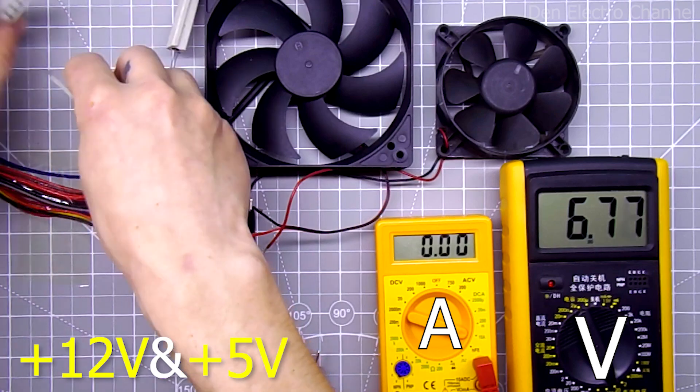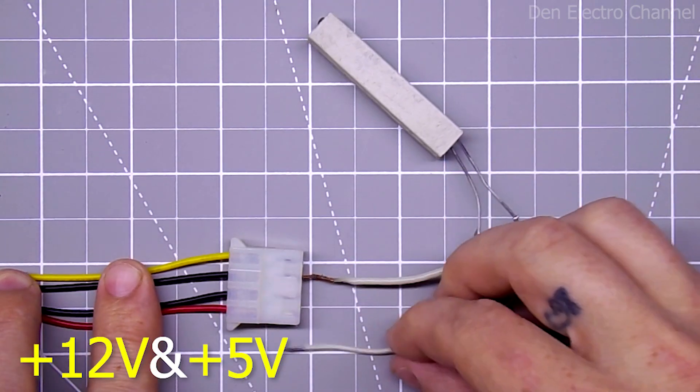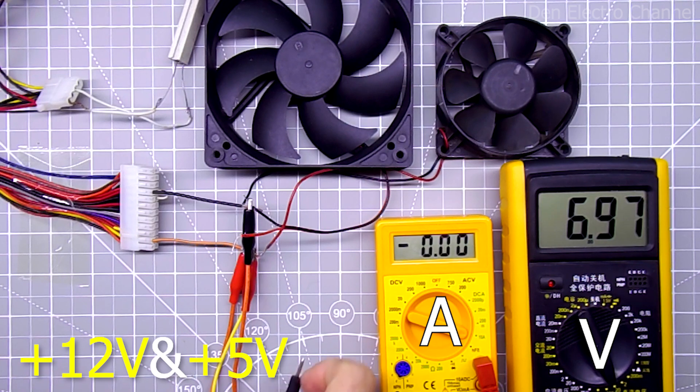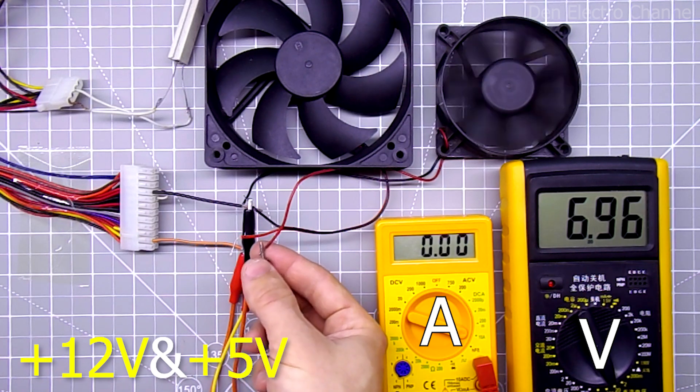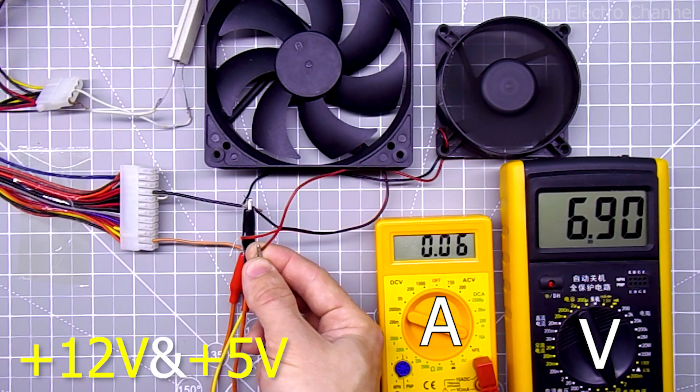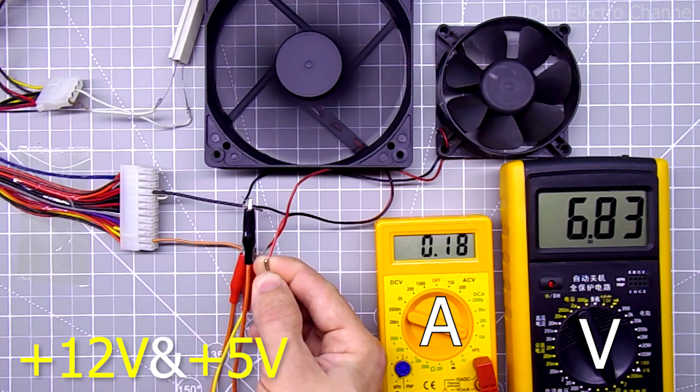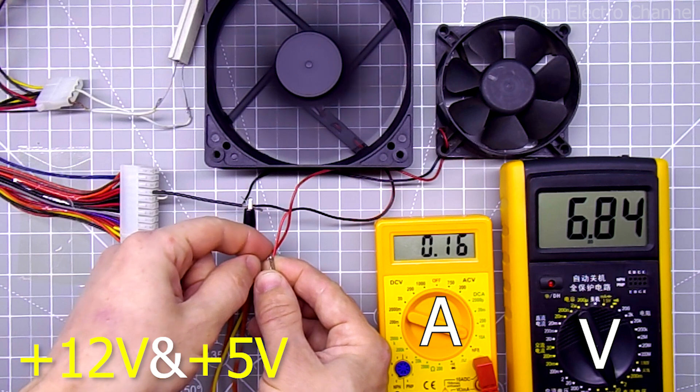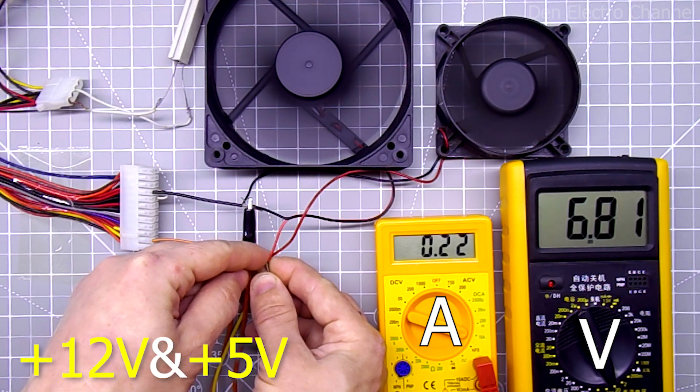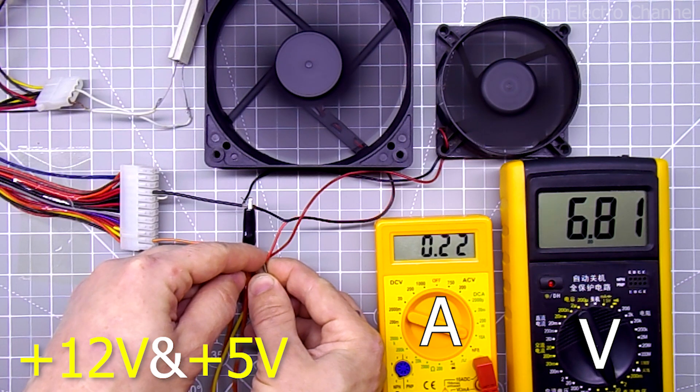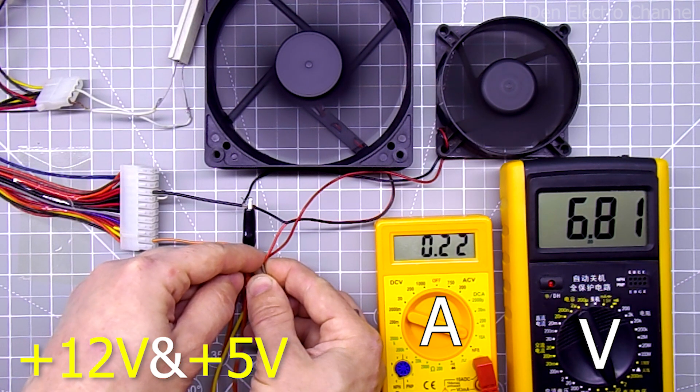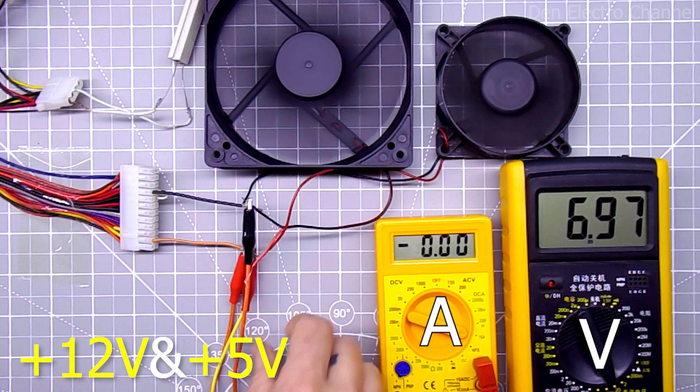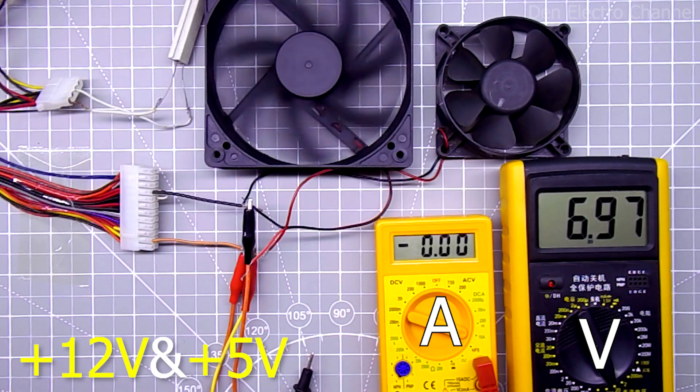I'll try to load the 5 volt line with a resistor and see if anything changes. After connecting it, the voltage increased by about 15 millivolts. I connect a small cooler. The voltage dropped a little less than last time, only by 10 millivolts. I connect a large fan. Now it's started and the power supply did not turn off. I connect the second fan and everything is fine, nothing turns off. The current is 220 milliamps and the voltage has hardly dropped. As you can see, if you load the 5 volt line with some kind of load, the power supply works more stably. The voltage drops less and the power supply does not go into protection.